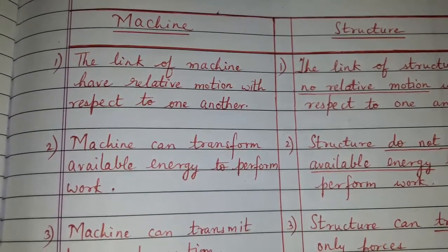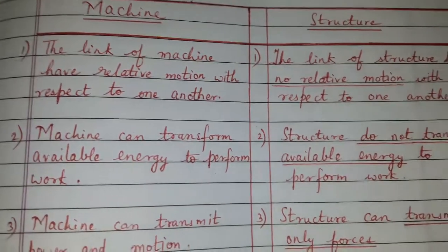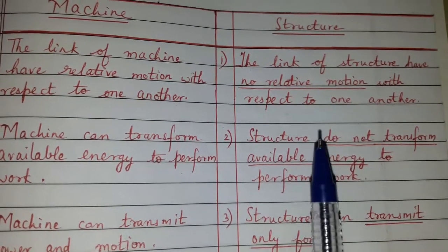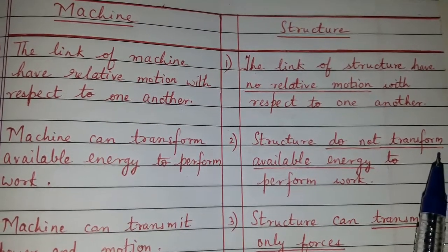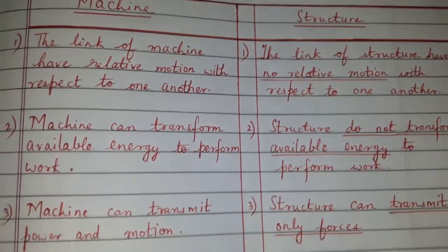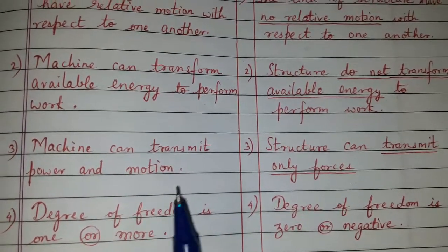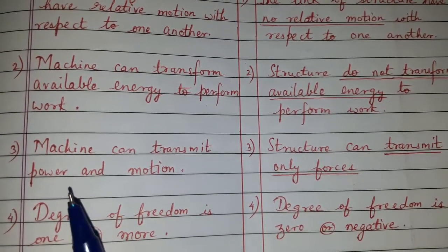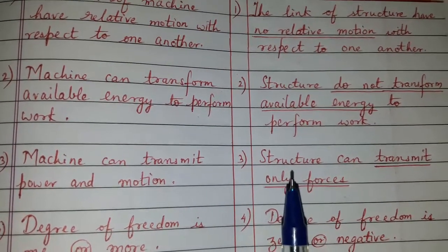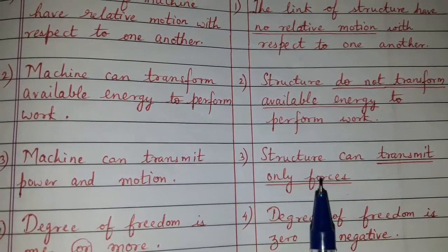A machine can transform available energy to perform work, whereas a structure does not transform available energy to perform work. A machine can transmit power and motion, while a structure can transmit only forces.